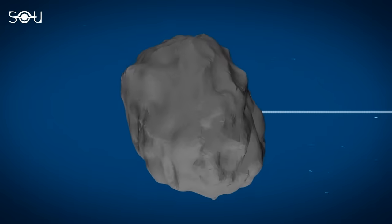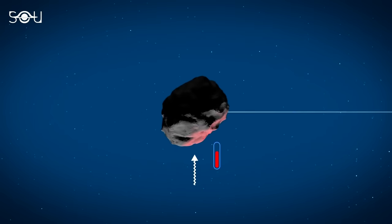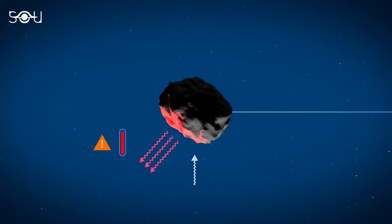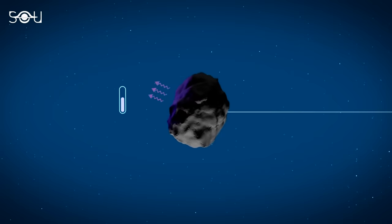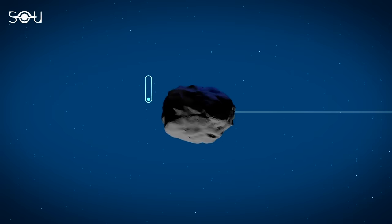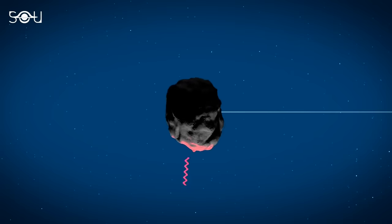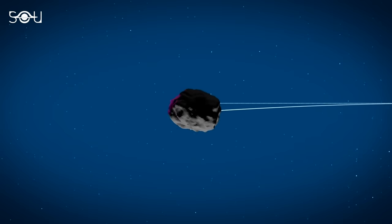When sunlight strikes a rotating asteroid, the day side heats up. As the asteroid turns, the night side cools down and releases the heat. This exerts a small thrust on the asteroid, which can change its direction over time.